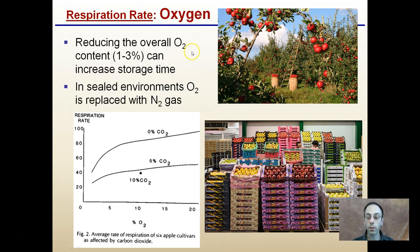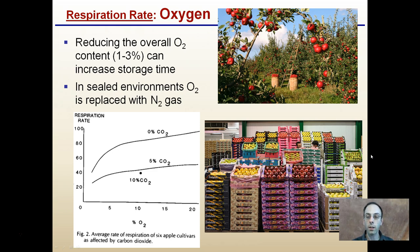Oxygen is our last factor when we talk about respiration rate. Reducing the overall oxygen content to about 1 to 3% can increase storage time. In a sealed environment, particularly for apples, oxygen gas can be replaced with nitrogen gas as a way to reduce the respiration rate and increase the shelf life of apples. It's actually possible to keep apples about a full calendar year under these conditions. The reason they tend not to do that is that fresh apples are usually coming out, and the stored ones don't taste quite as good as the freshly picked ones.